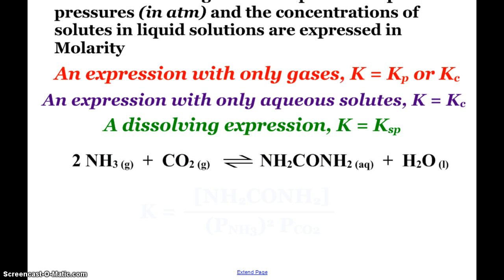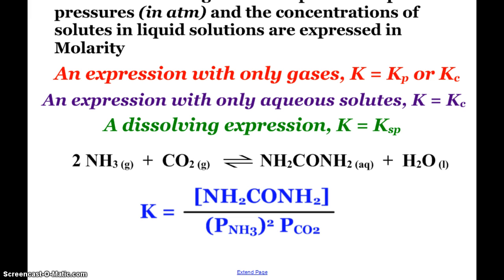So where it gets a little different, like here we have that reaction where ammonia gas reacts with carbon dioxide gas to make urea and water. So the thermodynamic equilibrium constant expression here is the concentration of urea divided by the partial pressure of ammonia squared times the partial pressure of carbon dioxide. Water is a liquid, it still is not in the equilibrium expression and neither would any solids be.